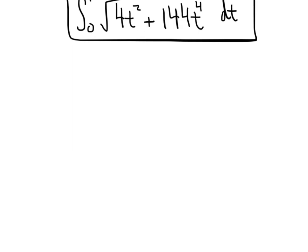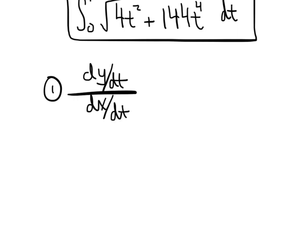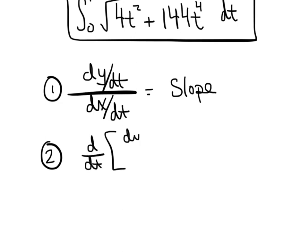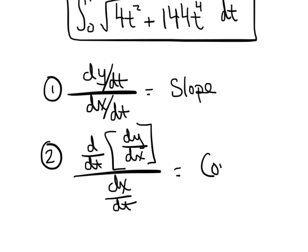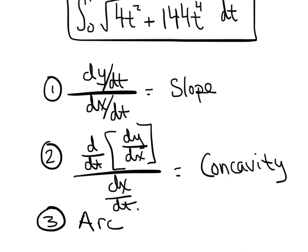To recap: dy/dt divided by dx/dt measures slope — that's your first derivative. Concavity is found by taking the derivative with respect to t of the first derivative, then dividing by dx/dt — that's the second derivative. And the arc length formula uses the integral of the square root of (dx/dt)² + (dy/dt)² dt. Those are the three topics from today, and we'll get more practice tomorrow.